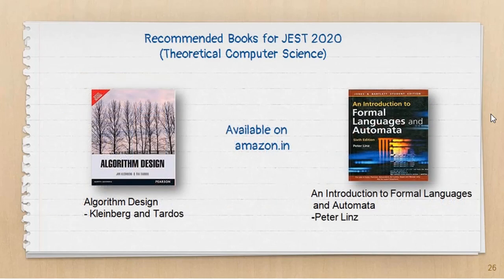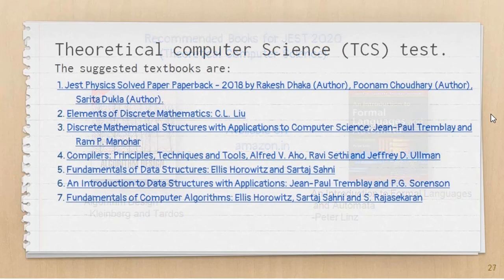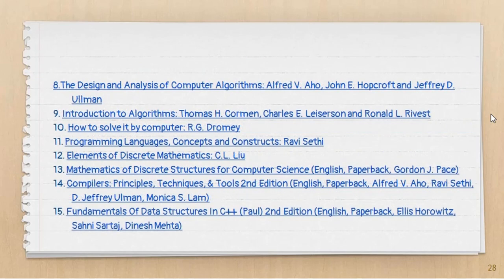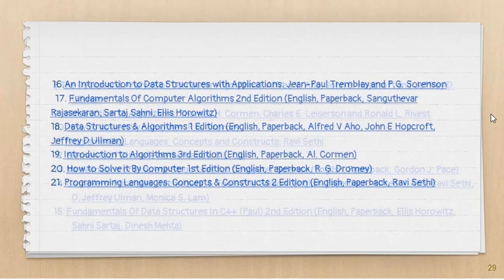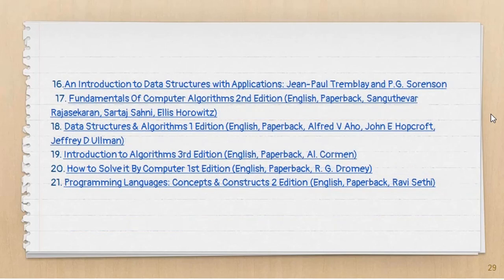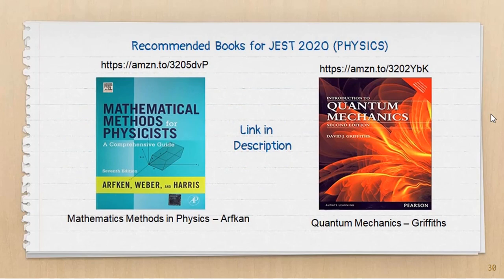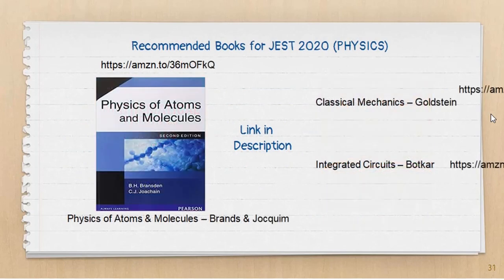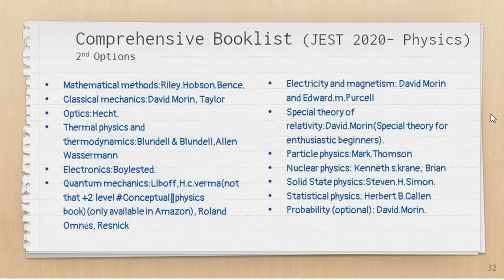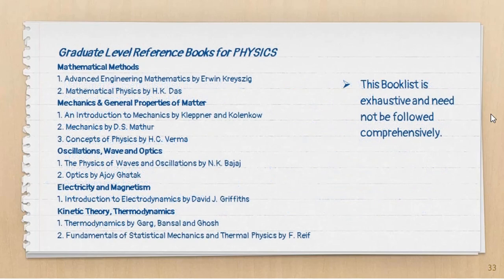Here is a comprehensive list of all recommended books for theoretical computer science — do check them out or use the links in the description. For physics, there are selective books which are a must, and you can find them via links given in the description. Here is another comprehensive book list for the physics paper, although these are second options to the primary books mentioned.